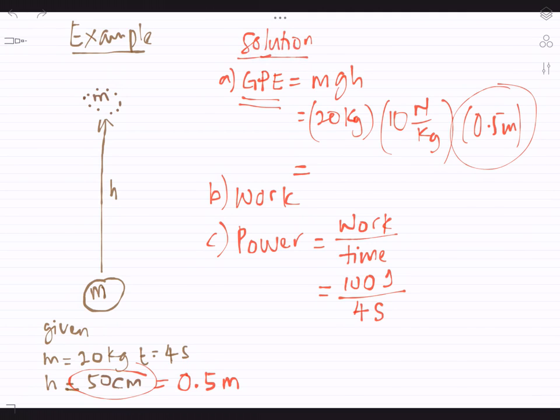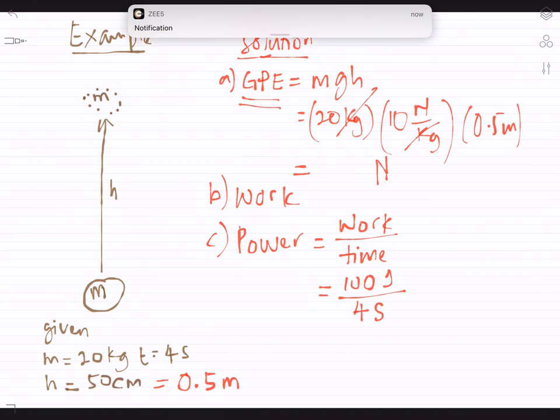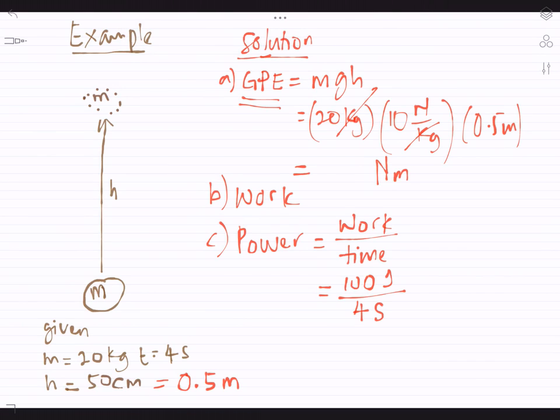And then when you solve the unit, let us try to solve the unit first. Kilogram, you can cancel it here. And the remaining unit is newton and meter. So the unit is newton meter. And then when you multiply the number 20, 10, and 0.5, the answer is 100. So the answer is 100 newton meter, or you can write in another unit 100 joules. It's the same thing.